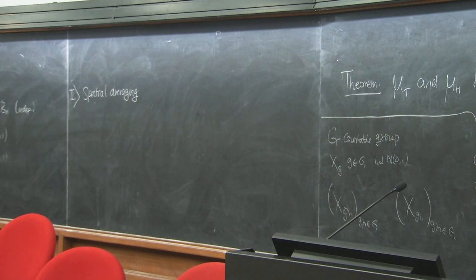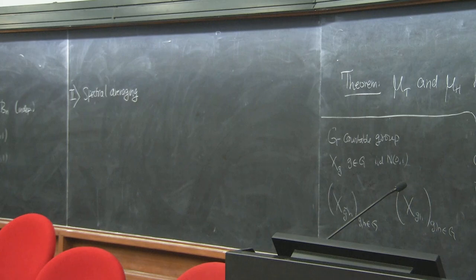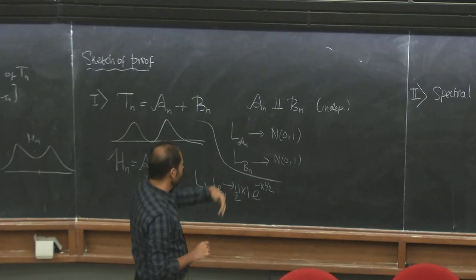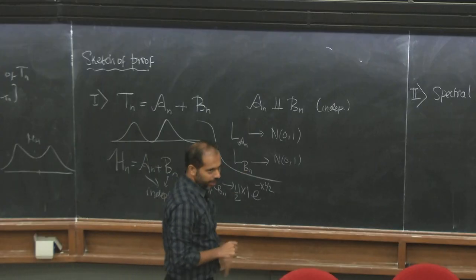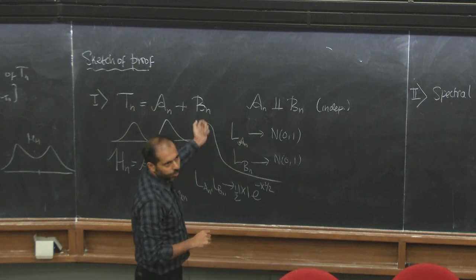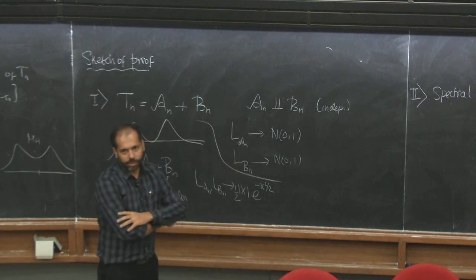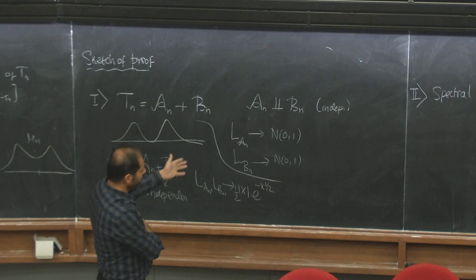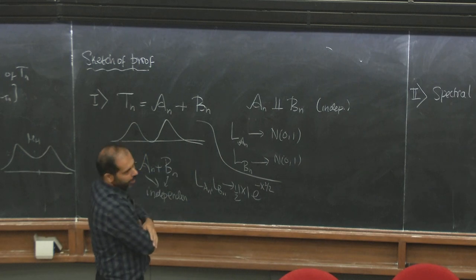There is a different spectral averaging we have to do in the Toeplitz case and in the Hankel case. These are the two main steps from which we get the absolute continuity of mu_T and mu_H. What I would like to do in the remaining time is explain these two steps.